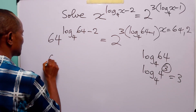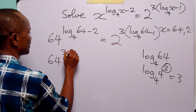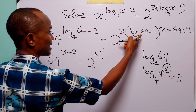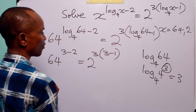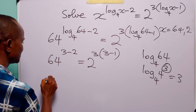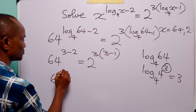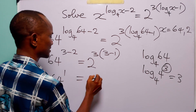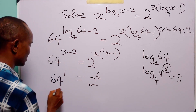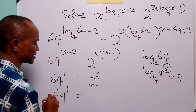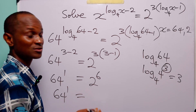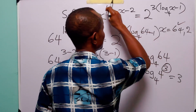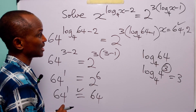We have log to base 4 of 64, which is the same as log to base 4 of 4 to the power 3. And of course, log to base 4 of 4 to the power 3 is simply equal to 3. So on the left hand side, we have 64 to the power 3 minus 2 is equal to 2 to the power 3 times 3 minus 1. This is 64 to the power 1, and on the right, 2 to the power 6 minus so 64 equals 64. So 64 satisfies this exponential equation.